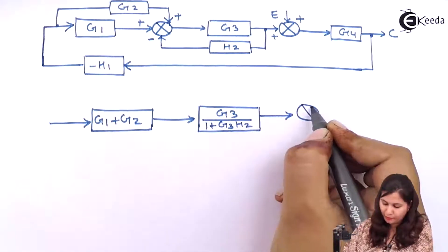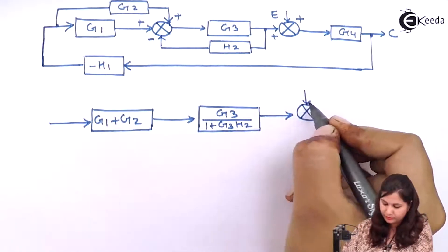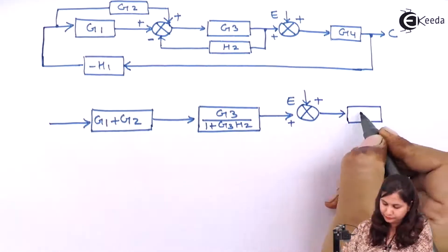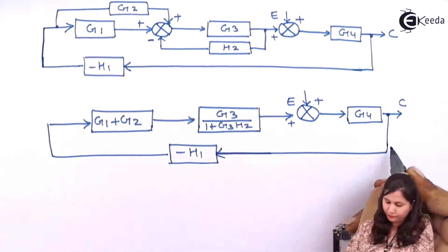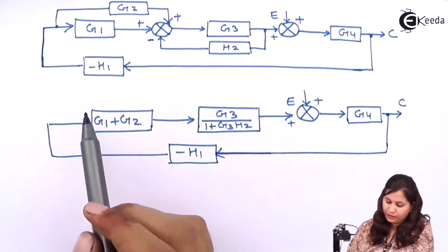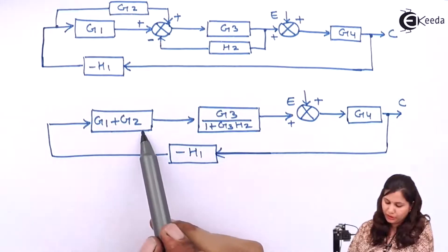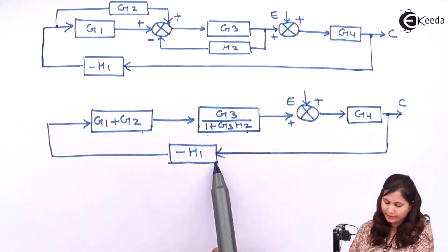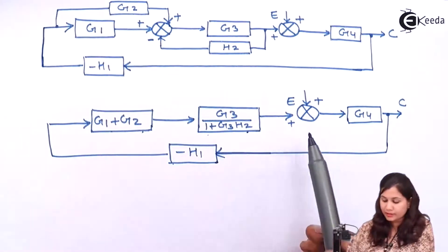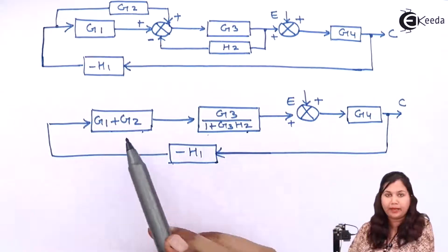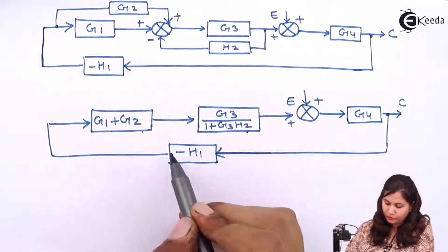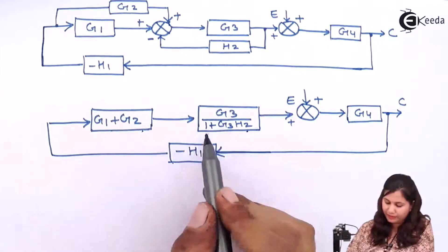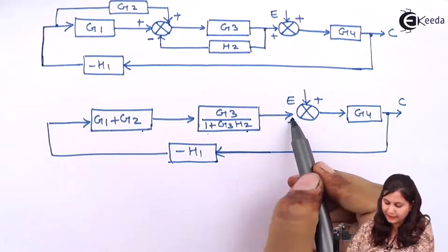Here we will have the summing point. Now these three blocks — G1 plus G2, G3 upon 1 plus G3H2, and minus H1 — they will come in series, so their transfer functions will be multiplied. This minus sign can be put here, so we will consider this minus sign and get the transfer function as G3H1 with the minus sign of minus H1 included.